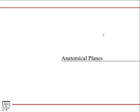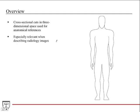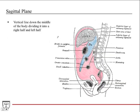To finish this lecture, we'll talk about some major anatomical planes — cross-sectional cuts in three-dimensional space, used for anatomical references and especially relevant when describing radiology images. The sagittal plane draws a vertical line down the middle of the body, dividing it into right and left halves. This sagittal view of the abdomen shows one half of the body.